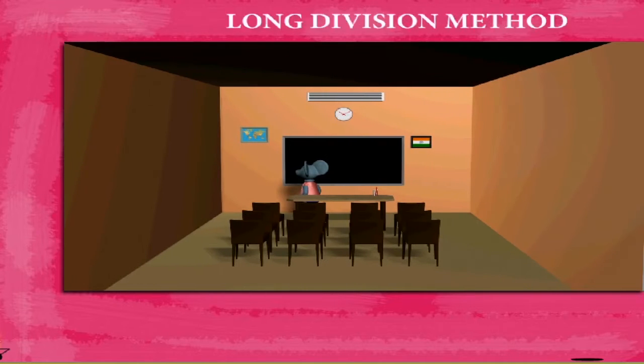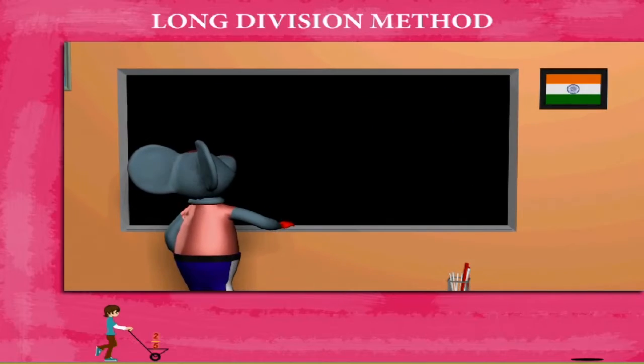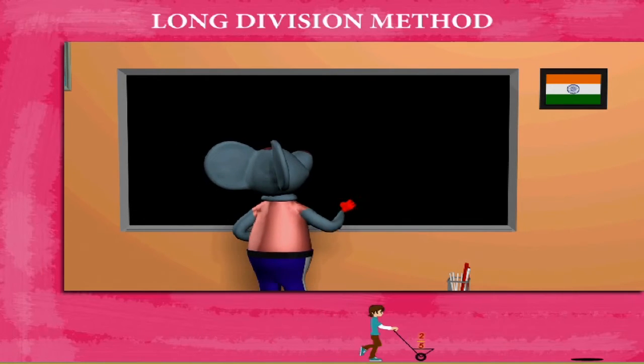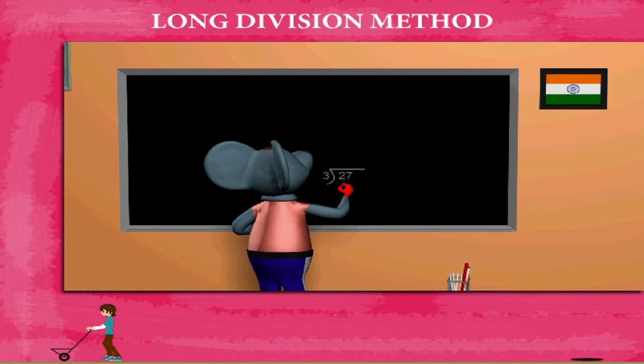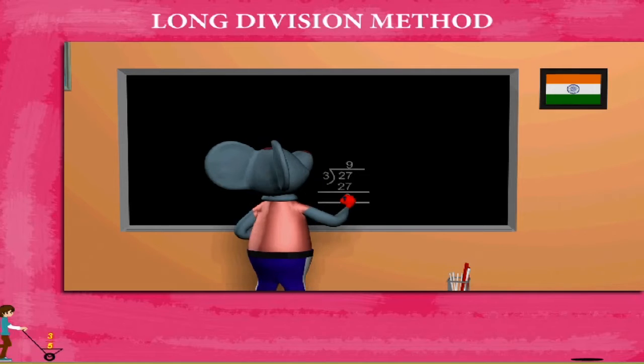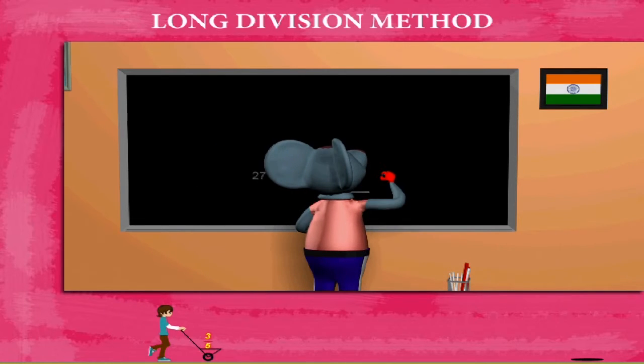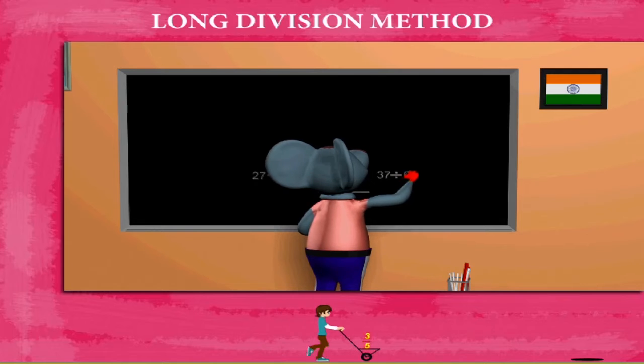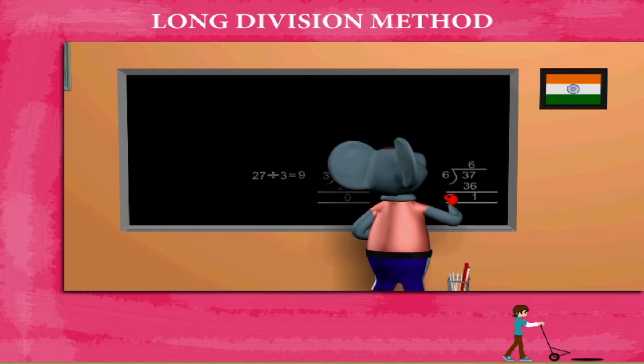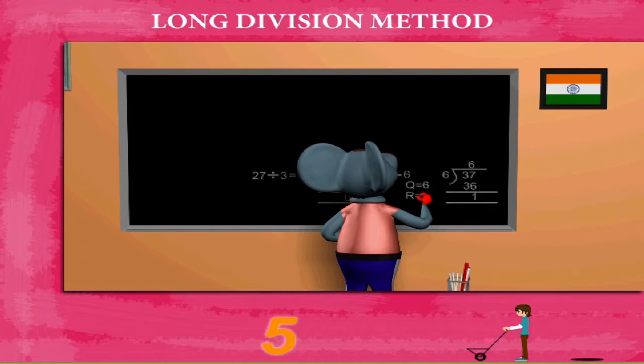Long Division Method. Robby Mouse has a question on the board. He has to divide 27 by 3. He uses the long form, writes 27 as the dividend and 3 as the divisor. Three nines are 27, so he writes 9 as the quotient and the remainder is 0. Now he divides 37 by 6 using the same method. He gets 6 as the quotient and 1 as the remainder.